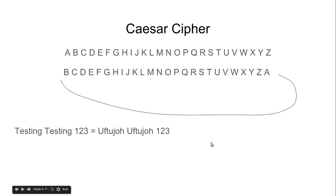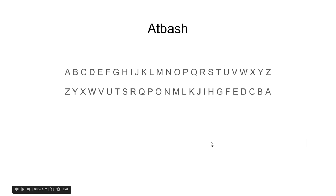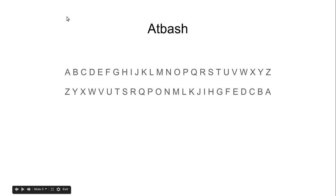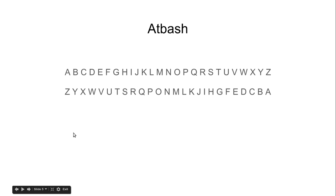Now if we go to the next cipher, which is atbash, this is really simple. You just run through all the letters backwards: A equals Z, B equals Y. This is easy to crack too. If you see lots of G's and lots of V's, those will correspond to lots of T's and lots of E's — which are the most commonly used letters — so it's easy to crack.